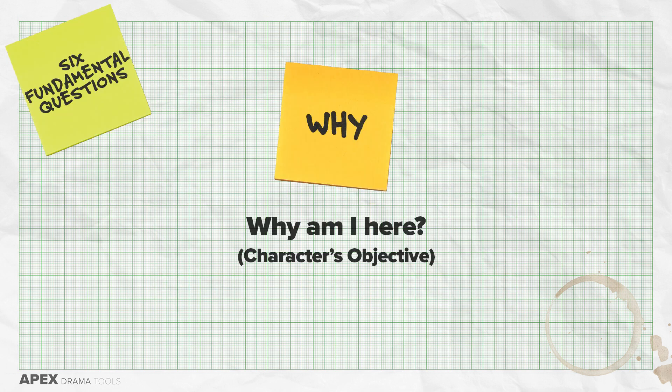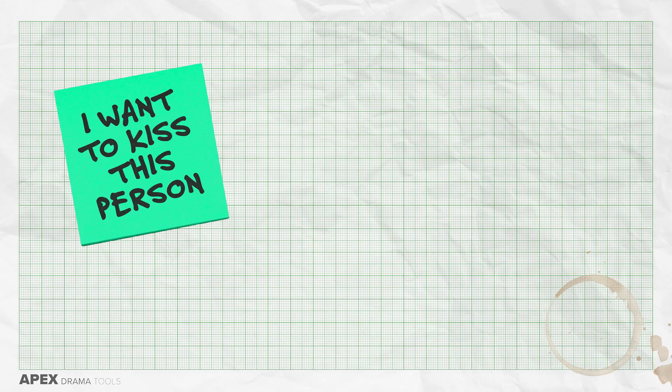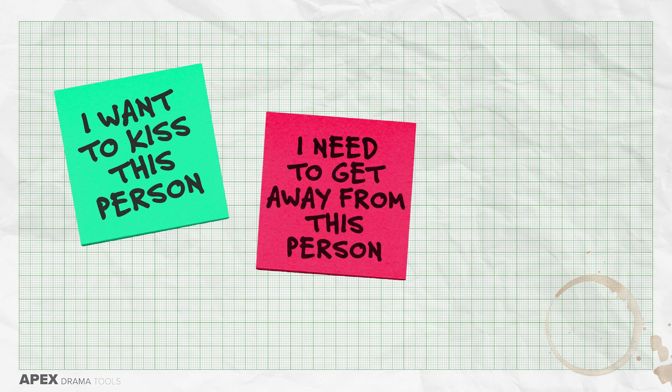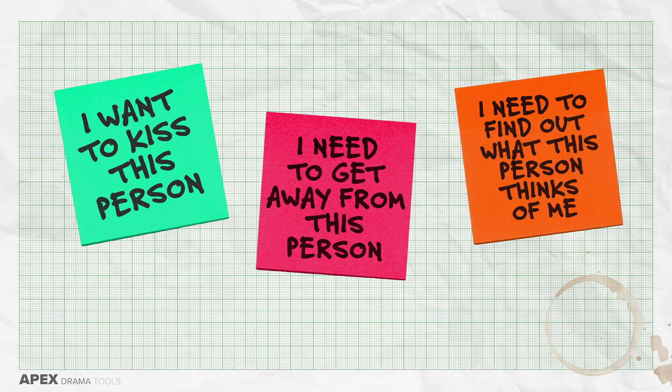Why is our fourth question. The most useful interpretation is: why am I here? This ties to the character's objective. The objective could be 'I want to kiss this person,' 'I need to get away from this person,' or 'I need to find out what this person thinks of me.' What is your objective for this scene? Why are you here? Explain why.